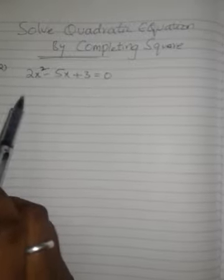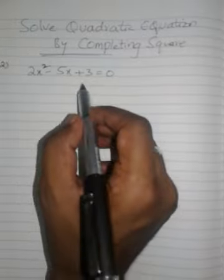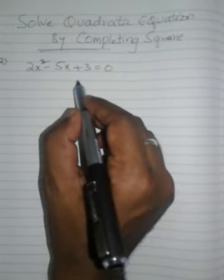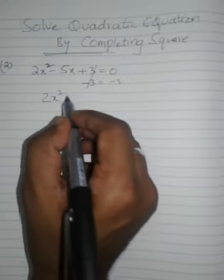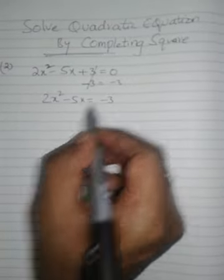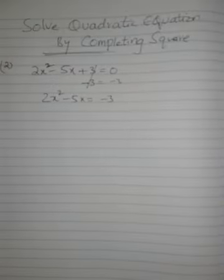This question will do the same as the previous one. We'll proceed by cancelling out our constant number first and we'll write the left out terms in the equation as 2x square minus 5x equals to minus 3.